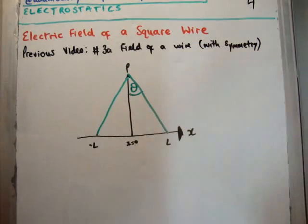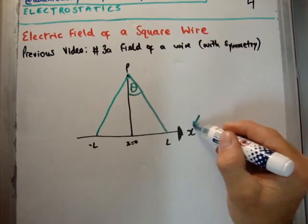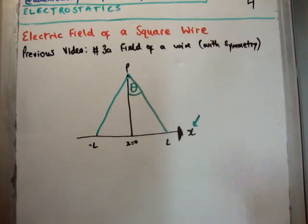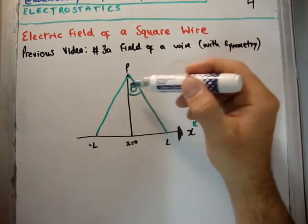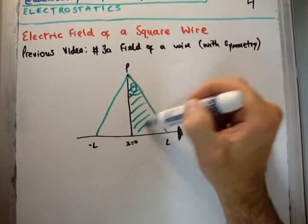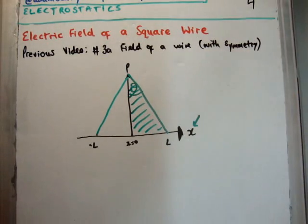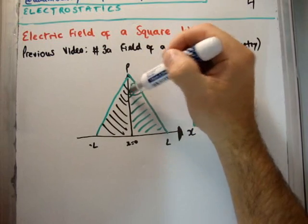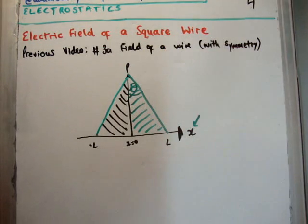And what we found was that because of the symmetry, all the horizontal components, in this case in the X axis, were going to cancel. So what we did was, we integrated from X equals zero to X equals L and we found the field in this area here in the Z axis. And then we multiplied it by two in order to account for the field on this particular side from zero to minus L.